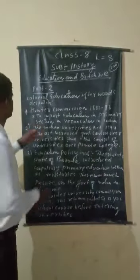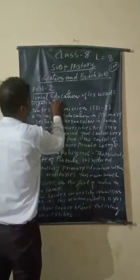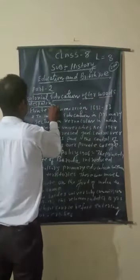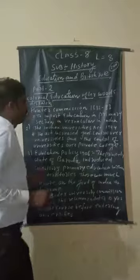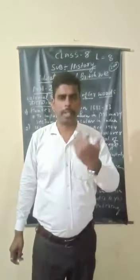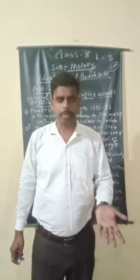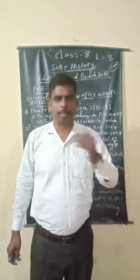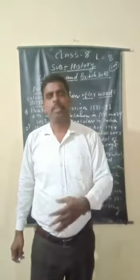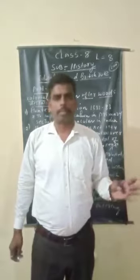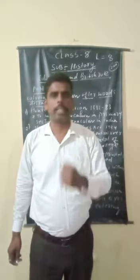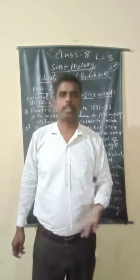Here we will discuss about colonial education after Wood's Despatch. In the Despatch, they highlighted some material related to primary school. After primary school, a particular language was used, and the method of education was in English. They set up colleges in Calcutta, Madras, and Chennai, just like universities to impart education.